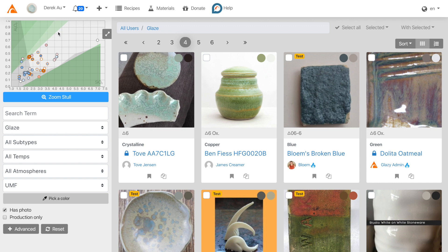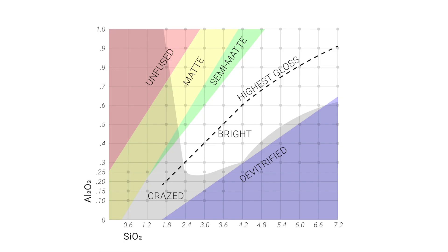Overlaid on top of this chart is a Stull chart. The Stull chart was created by R.T. Stull in 1912, and it shows regions of glazes on top of the silica alumina grid.